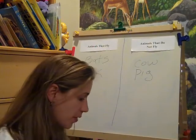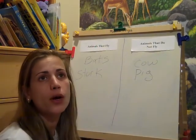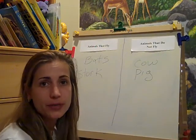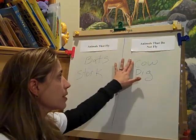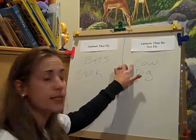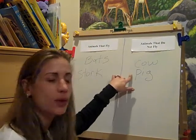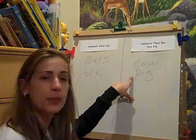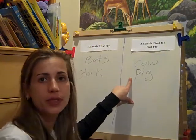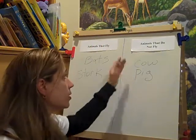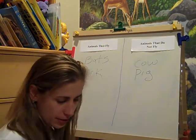Another variation could involve sight words or letter recognition — like, 'Cow, what does cow begin with? The letter C. Pig, what does pig begin with? The letter P.' We can do a whole different lesson on the letters of the alphabet in addition to this.